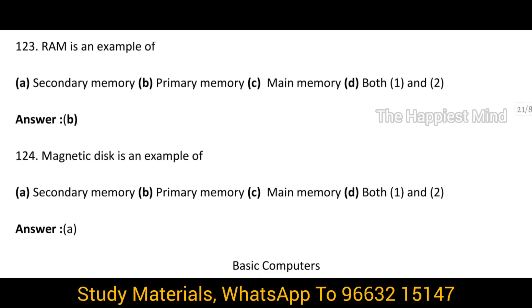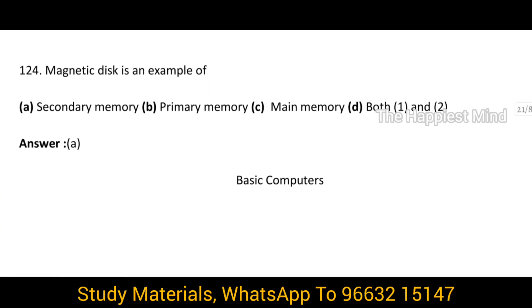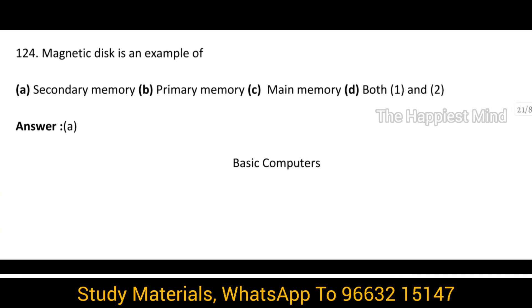Question 123: RAM is an example of — option B — primary memory. Question 124: Magnetic disk is an example of — option A — secondary memory.